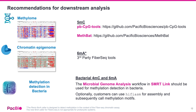For downstream secondary and tertiary analysis, PacBio recommends pbcpg-tools and MethBat for 5mC analysis. These tools can be found on our GitHub page. For downstream 6mA analysis of human-treated libraries, we recommend using the third-party FiberSeq tools. For microbial 4mC and 6mA, we recommend the microbial genome analysis workflow in SmartLink, or optionally use HiFiASM with subsequent calling of methylation motifs.